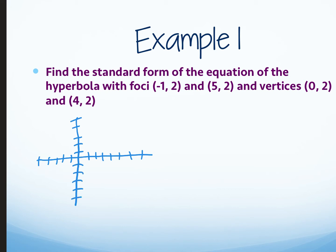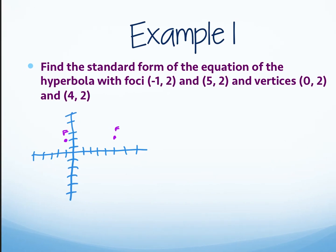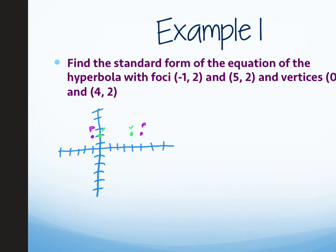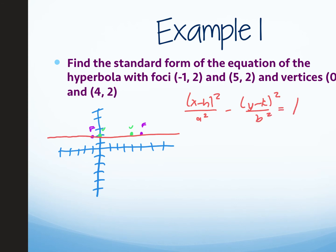Let's plot our points. First I'm going to plot my foci in purple: (−1, 2) and (5, 2). Then I'll plot the vertices in green: (0, 2) and (4, 2). Now I need to draw my transverse axis — all of my important information is along this horizontal line. So if it's a horizontal transverse axis, you're going to use the standard form equation: (x − h)² / a² − (y − k)² / b² = 1.